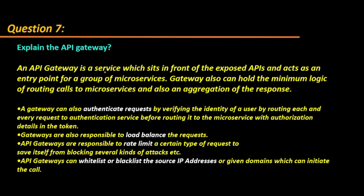The next question — question seven — is: explain the API Gateway.